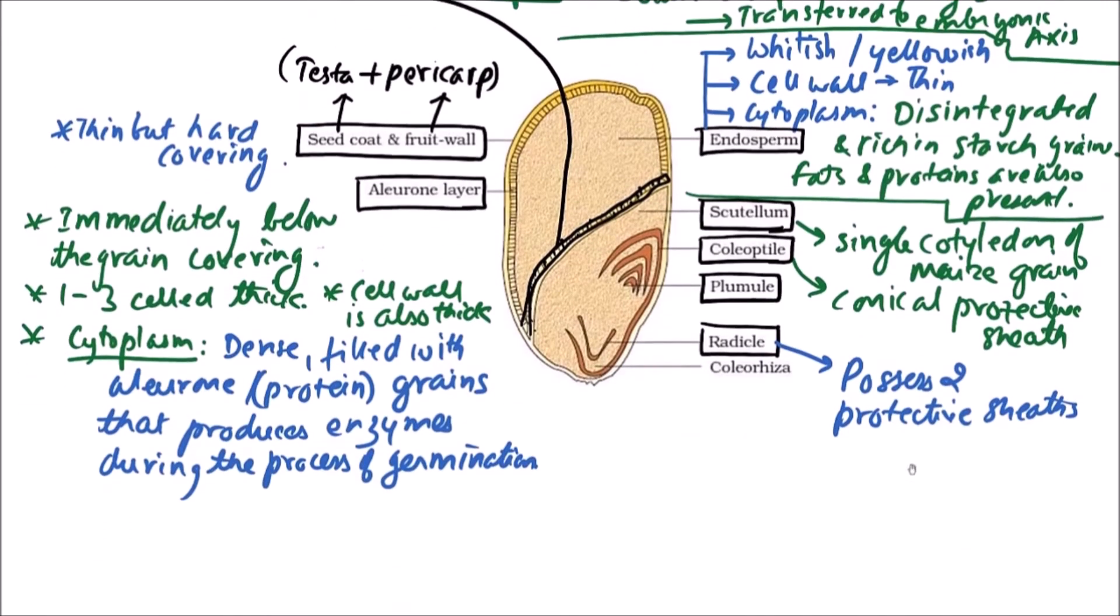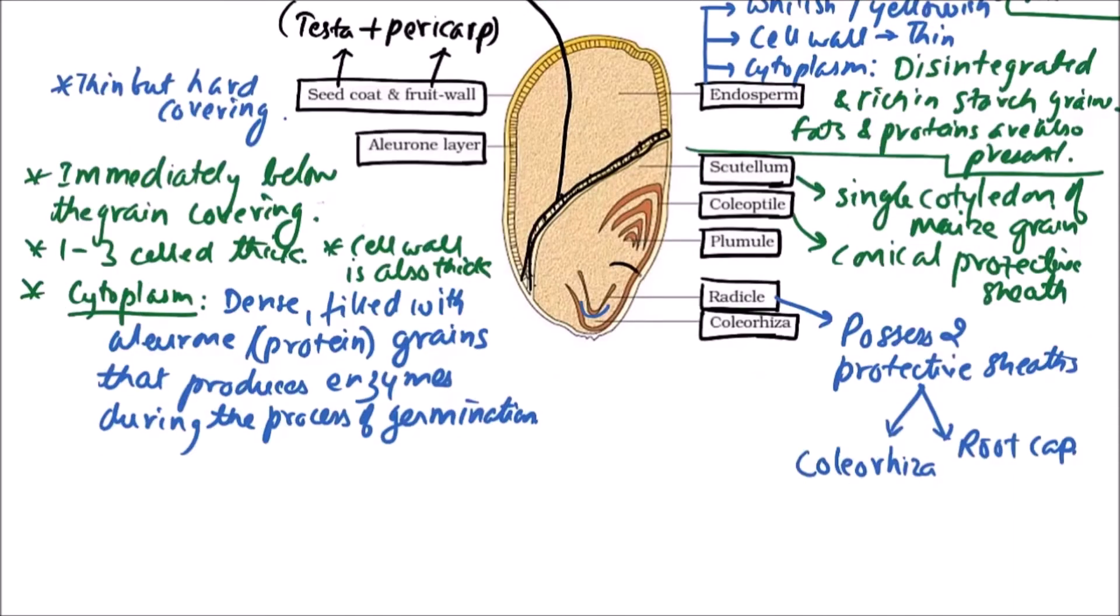It possesses two protective sheaths. First one is coleorhiza and another one is root cap. Immediately below is root cap and then below the root cap is coleorhiza. The part of embryo axis between plumule and radicle is cotyledonary node. All the structures starting from coleoptile, plumule, radicle, coleorhiza are collectively forming embryo axis.